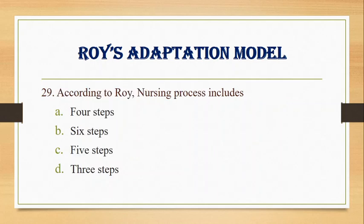Number 29. According to Roy, the nursing process includes: A. Four steps, B. Six steps, C. Five steps, D. Three steps. Answer: B. Six steps. According to Roy, there are six steps in the nursing process.